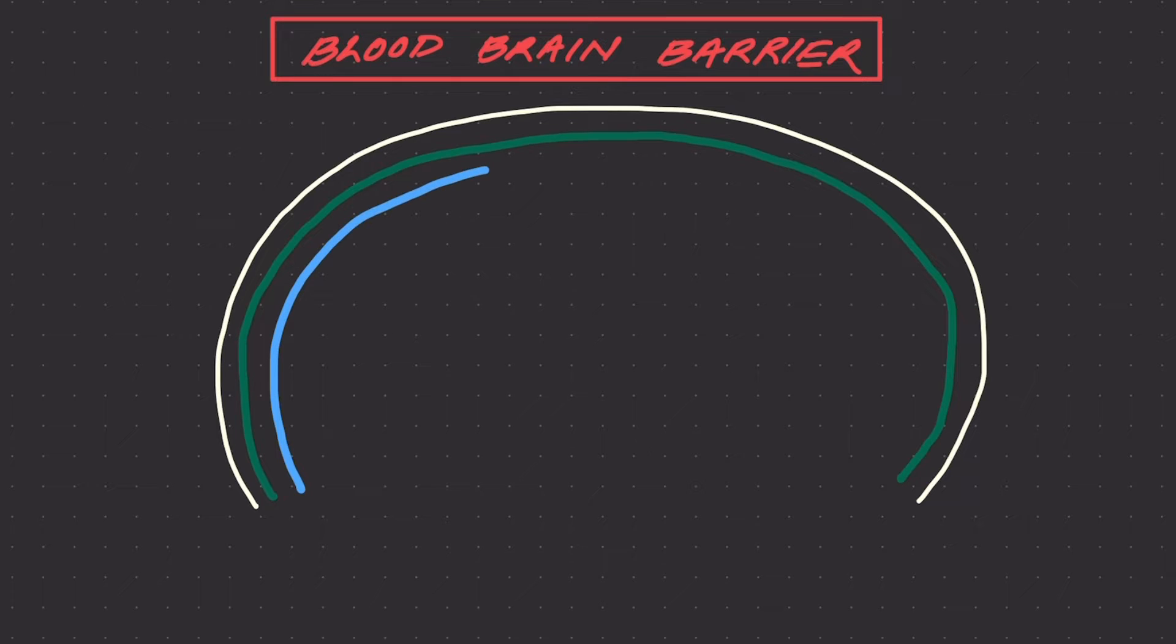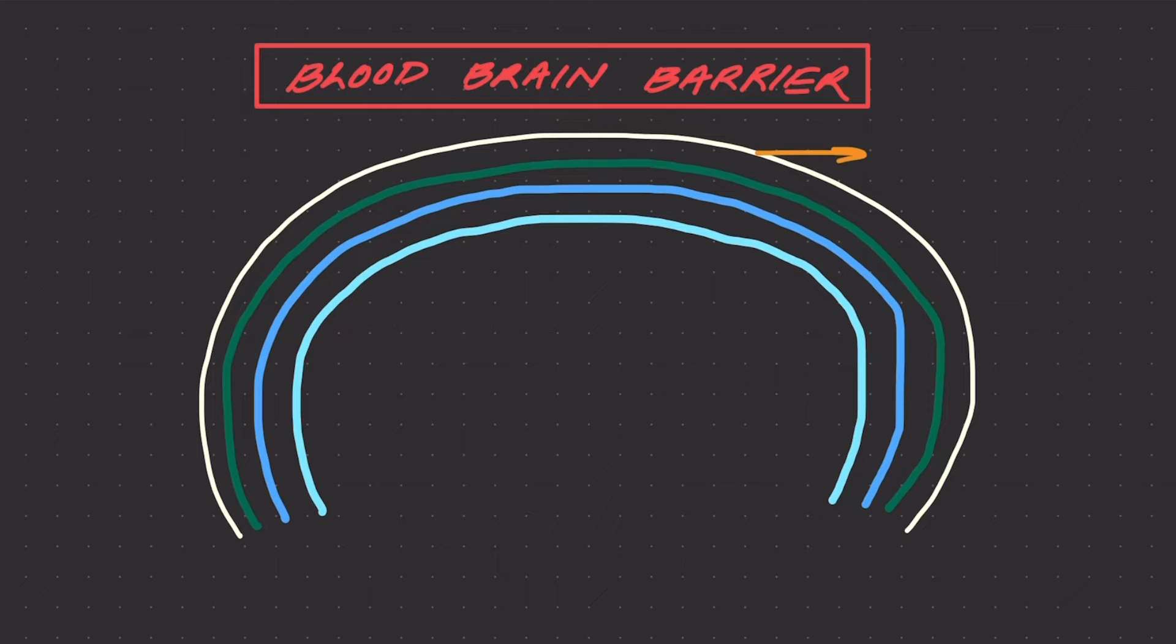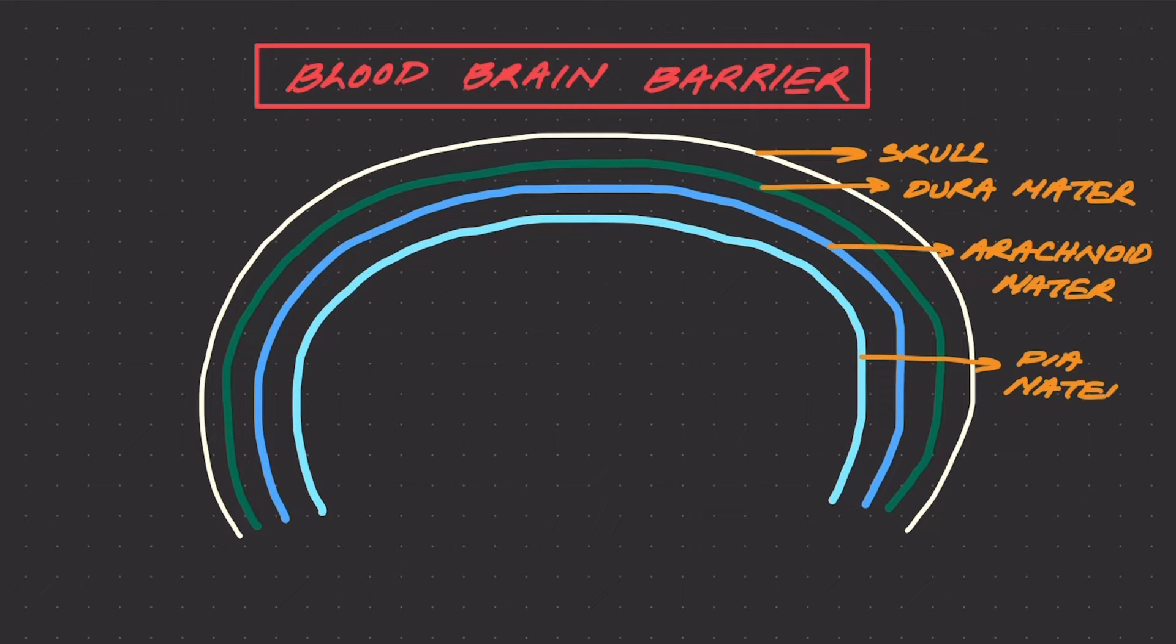Now where exactly is the blood-brain barrier? I'm going to draw a schematic diagram here. If I had to make a very crude schematic diagram of the brain, it will start off with the skull, then the dura matter, arachnoid matter, and the innermost lining is the pia matter. And then we have the brain.